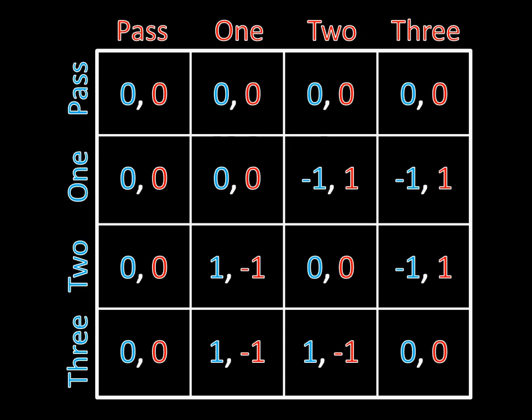In the past, when we were looking at the stoplight game or the stag hunt, what we would do to find pure strategy Nash Equilibria is look at each of the individual outcomes and see if anyone has a profitable deviation. This is a problem when you have a lot of different outcomes. In this game we have 16 different outcomes, and it's possible that you could have a much larger game than even this. Going through every single outcome when there are a lot of them is just going to be too time consuming.